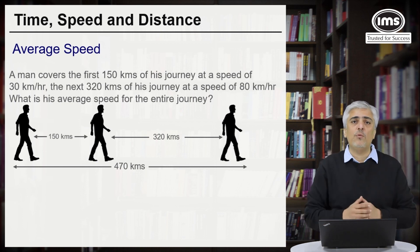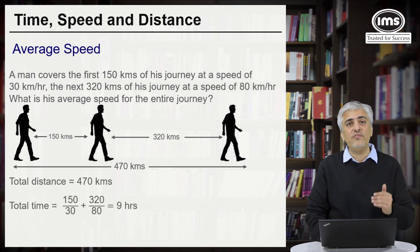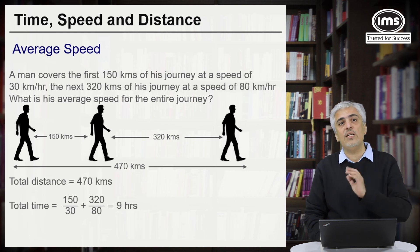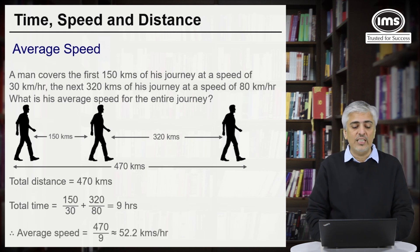So now if I go back to my formula, what was my formula? Total distance travelled upon total time taken. We know the total distance travelled is 470, but what about the total time? You don't know that. What you will have to do is calculate time at both the stages separately first. So the time will be 150 divided by 30, that will be 5 hours, plus 320 divided by 80, that will be another 4 hours. So the total time will be 9 hours. Got that much? Why did we need the total time? Because the formula said total distance travelled upon total time taken. And hence the average speed will become 470 divided by 9 which will be approximately 52.2 km per hour.